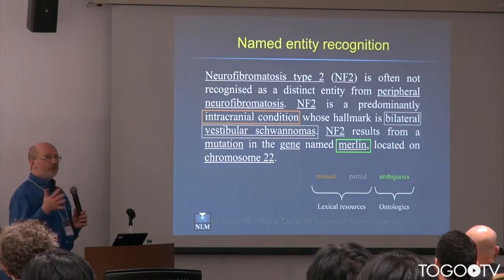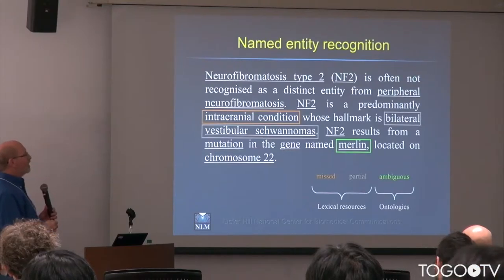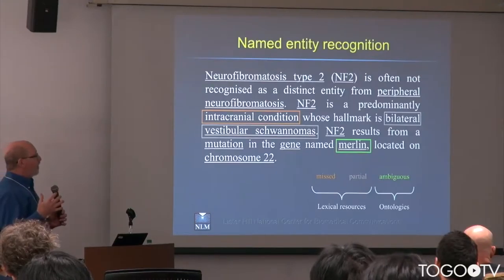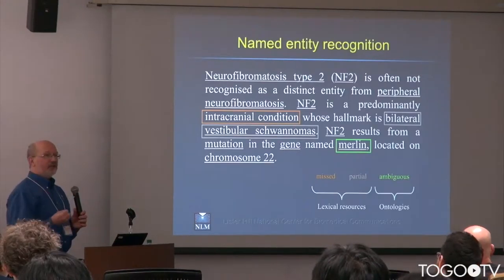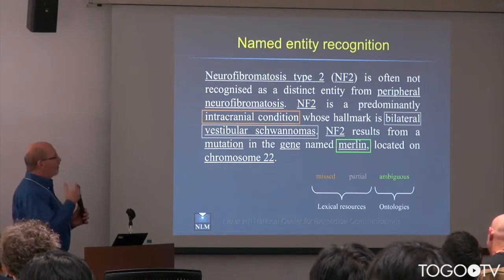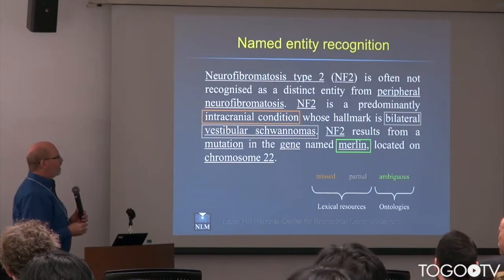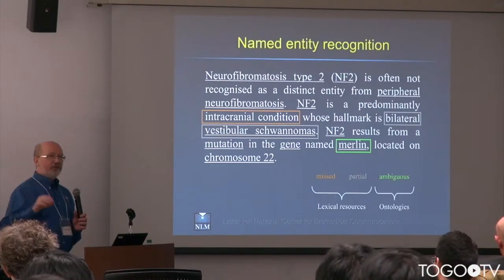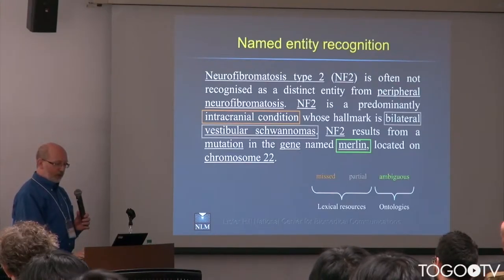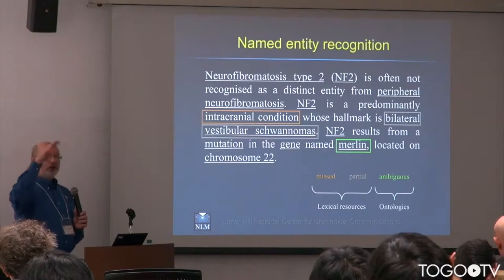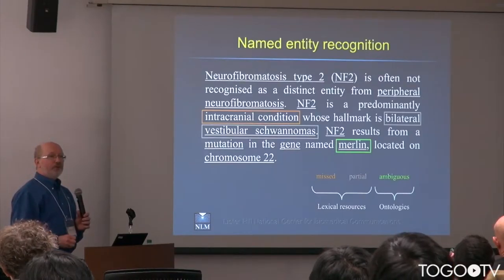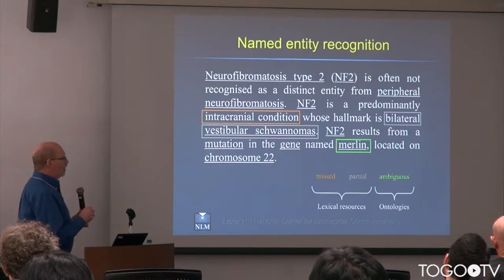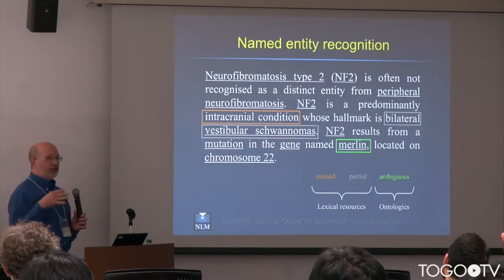Missed and partial annotations can be dealt with using better lexical resources — more complete ones might catch these cases. Ambiguity is usually dealt with at the level of an ontology, because the ontology provides context that helps disambiguate annotations. So there's a distinction to draw between lexical resources or terminologies on one hand, and ontologies on the other.